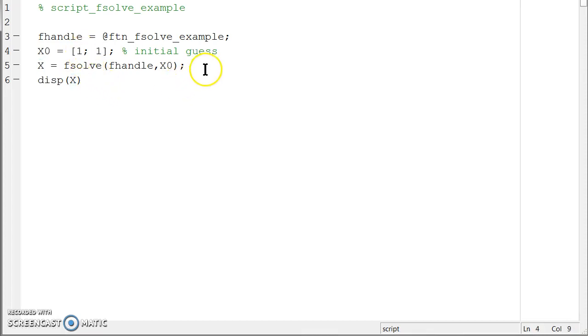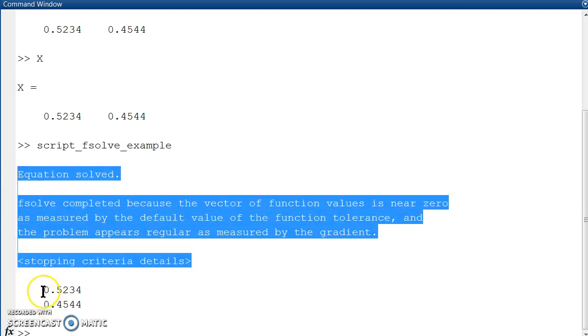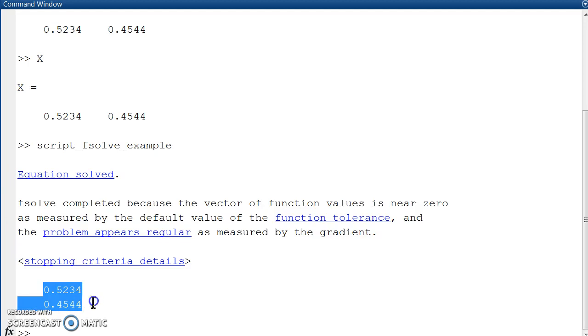So, I can change that by making the initial guess a column vector and then running it again. And then it spits out the same gobbledygook here after fsolve, but then my disp, or display of x, gave me the column vector, which is what capital X is.